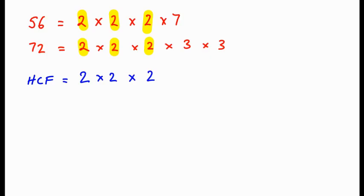I then scan for any other common numbers in both lists, and you can see that there's a 7 in the top number, but there isn't a 7 down in the second row. So I can't use any more common numbers. I work that out now. 2 times 2 times 2 is 8. So the answer to the highest common factor is 8.